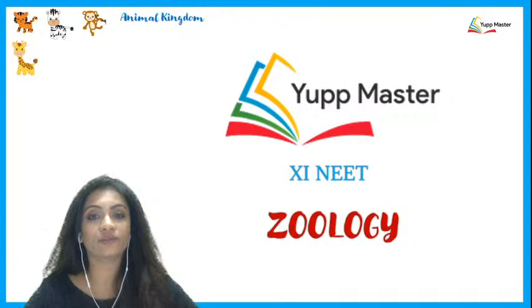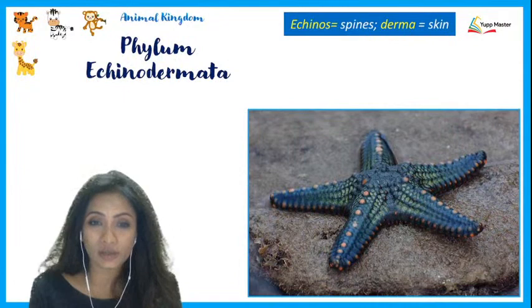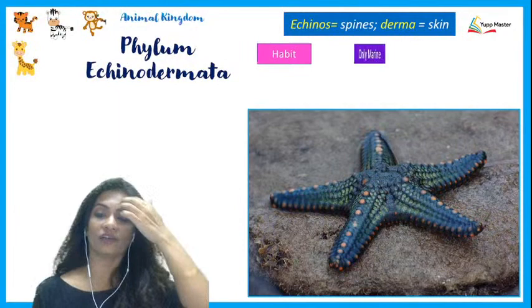Welcome to Yup Master. We're continuing with the chapter of Animal Kingdom and have now reached the phylum Echinodermata. When we talk about Echinodermata, organisms like the starfish come to mind. The word comes from 'echin' meaning spines and 'derma' meaning skin — so these are organisms which have a spiny skin.